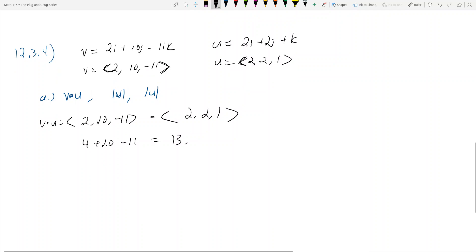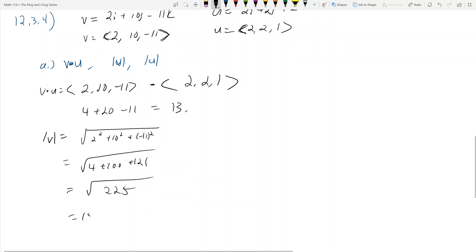What's the magnitude of v? The magnitude of v is the square root of each component of v squared added to each other. So that's 2 squared plus 10 squared plus negative 11 squared, which is then 4 plus 100 plus 121. And so this is actually the square root of 225, which happens to be 15.